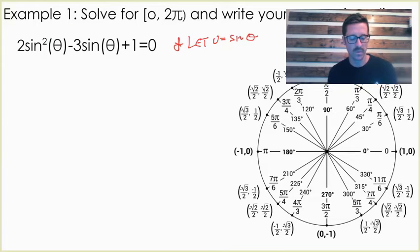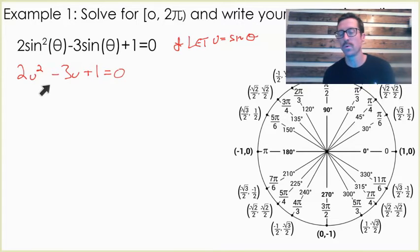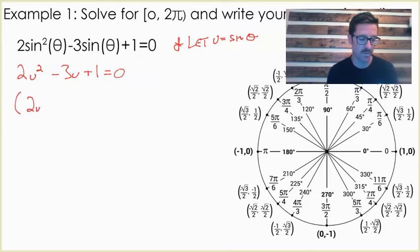Let u equal sine theta. And then what this becomes is 2u² - 3u + 1 = 0. Now I see this is just a normal quadratic. We've solved quadratics like this a thousand times. For this video, I'm not gonna go into how to solve the quadratic. I'm gonna solve it by factoring because I don't think this is too bad to factor.